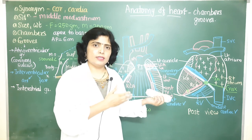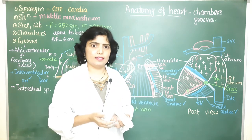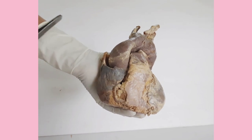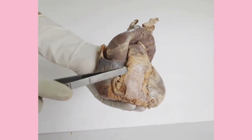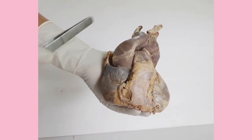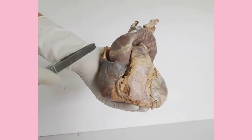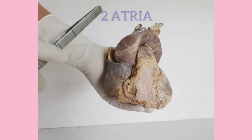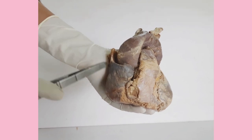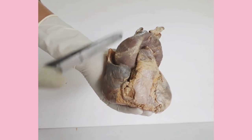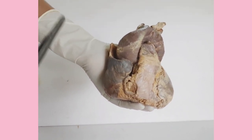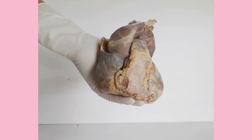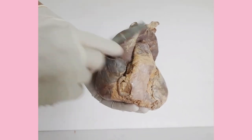Now we will see the same features on an actual specimen of the heart. The heart is a hollow conical muscular organ situated in the middle mediastinum, covered by the pericardium — outer fibrous pericardium which is a single layer and inner serous pericardium which is double-layered. There are four chambers: two atria and two ventricles. Two-thirds of the heart lies to the left of the midline and only one-third lies to the right.